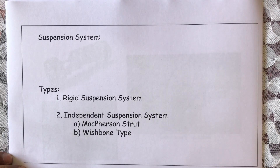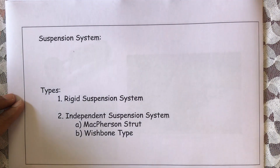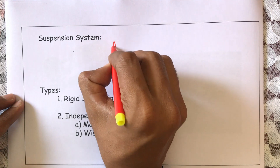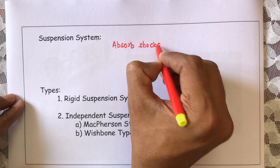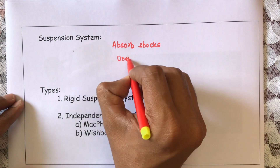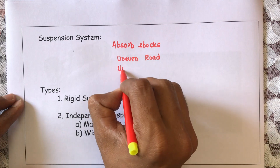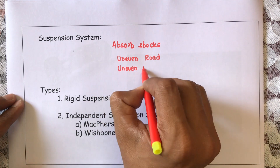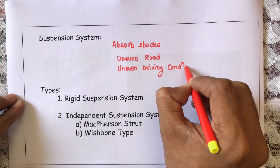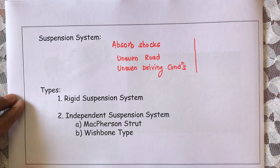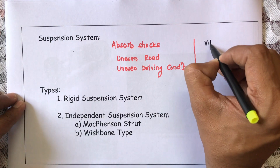Now let us look at the suspension system. The purpose of the suspension system is to absorb the shocks which are generated as a result of uneven road and uneven driving conditions. As a result of that, many vibrations are generated in the vehicle, and in order to reduce those vibrations, we need to use the suspension system.